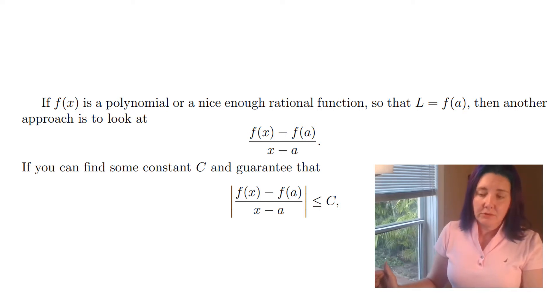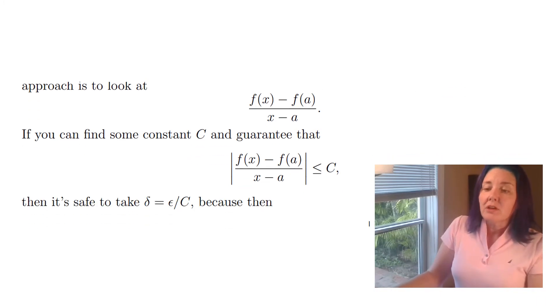Then an approach to finding your delta is to actually find a bound on the absolute value of the difference quotient. So here's what I mean: we want to find some constant C that guarantees that the absolute value of f of X minus f of a over X minus a is always less than or equal to C. And if you can do that, you can always choose delta to be equal to epsilon over C.